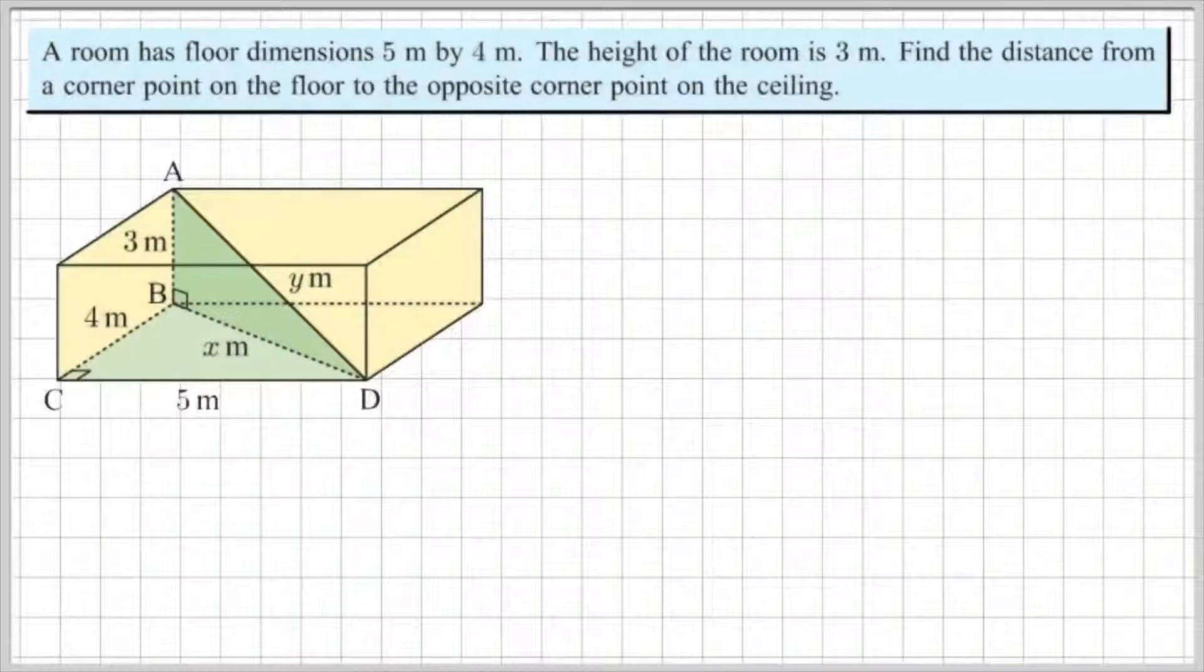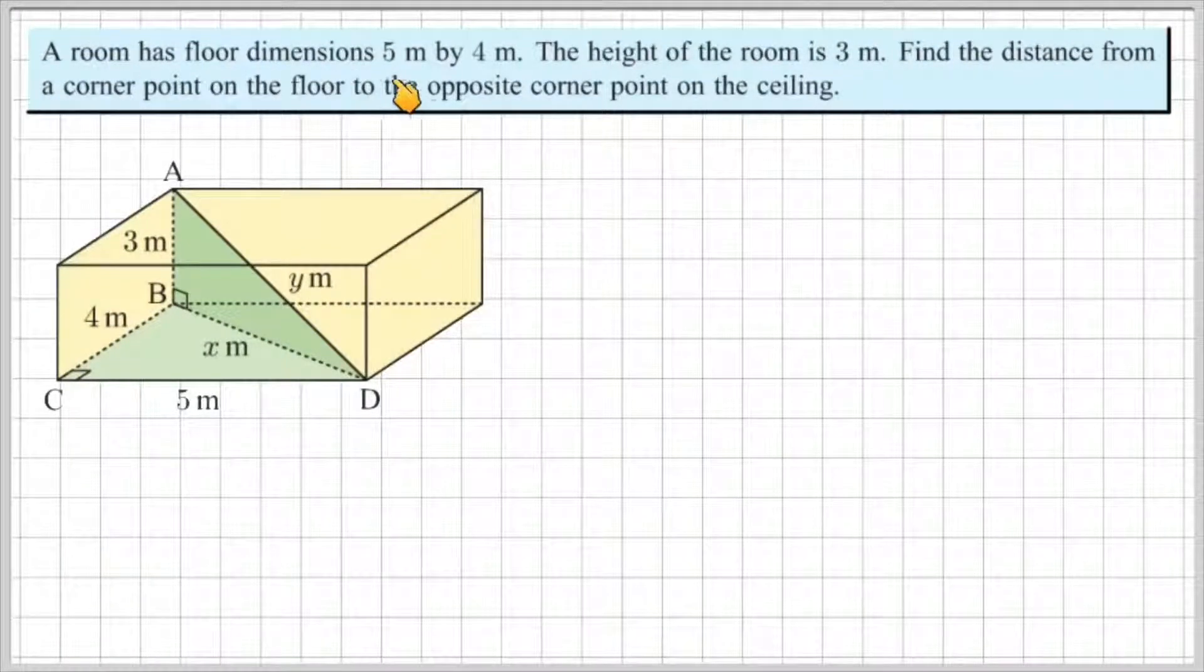This is a very typical exam style question. A room has the dimensions 5m by 4m. The height of the floor is 3m. Find the distance from a corner point of the floor to the opposite corner point on the ceiling.